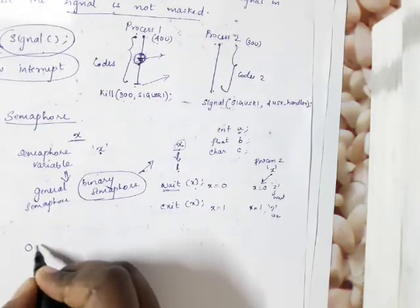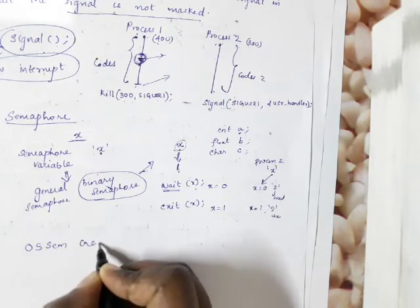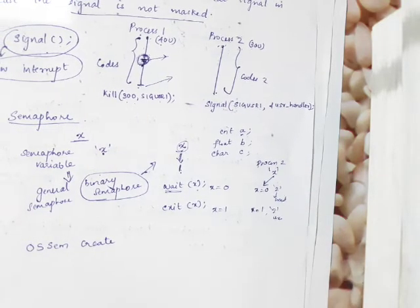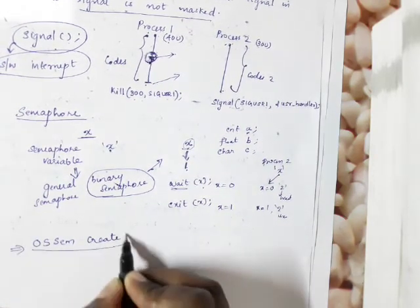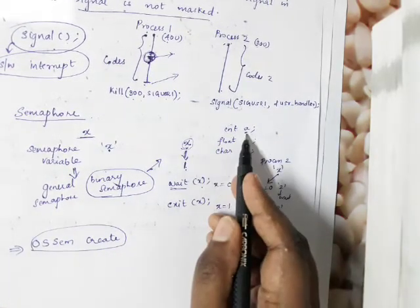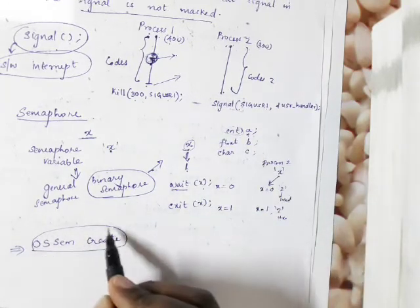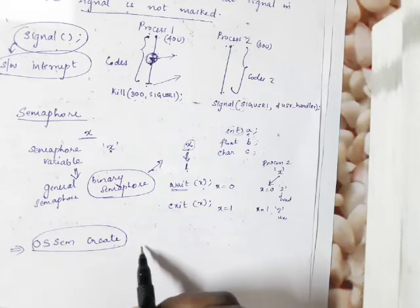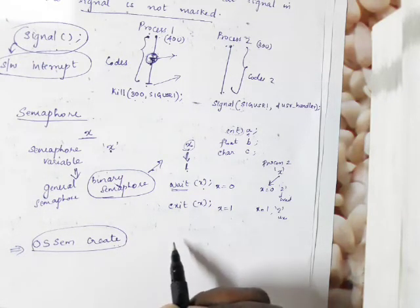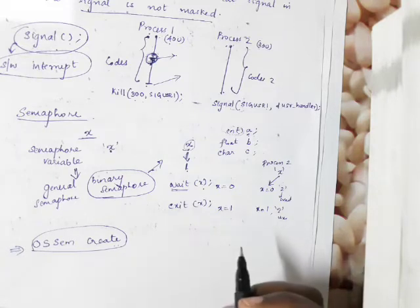The function is called 'os semaphore create'. It is a function — we use an integer as parameter. The function is created as semaphore. This function is used to create a semaphore and initialize it with an initial value.